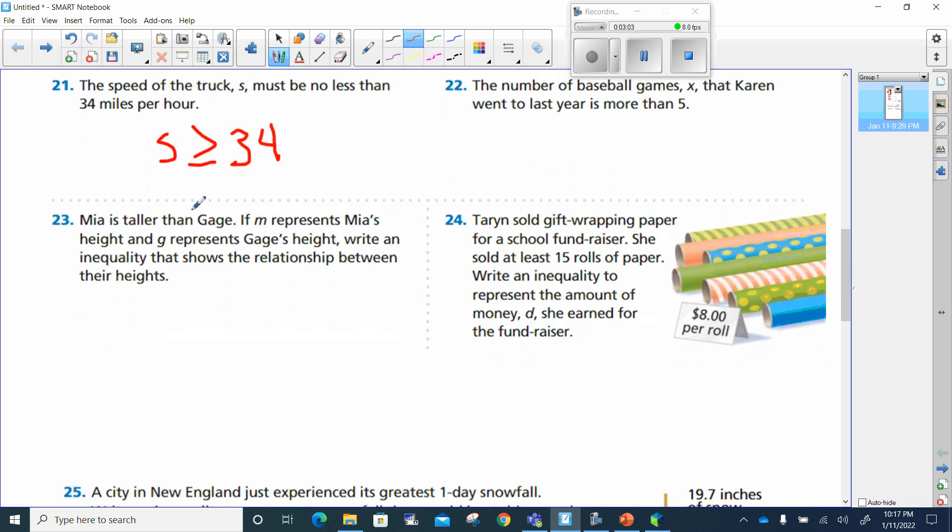Number 23. Maya is taller than George. If m represents Maya's height and g represents George's height, write an inequality that shows the relationship between the heights. Well, Maya, I'll just put m, is taller, so she's going to be greater than George, right?